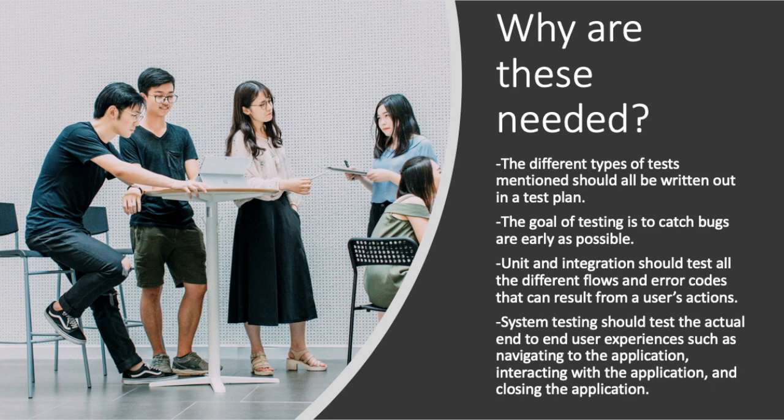System testing mimics a usual end user experience, such as actually navigating to the application, using the application, and then closing the application. Because these tests are longer, it will be less efficient to try to test all different possible variations here. This is why we leave the different variation testing to the unit and integration tests. Most importantly, this should all be communicated while creating a test plan to make sure full test coverage is achieved.